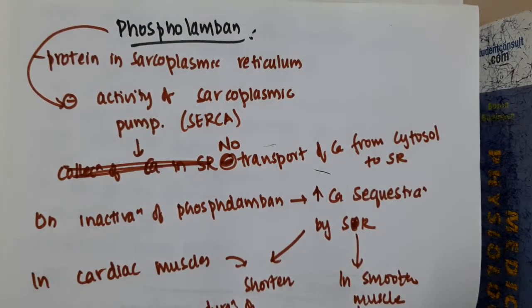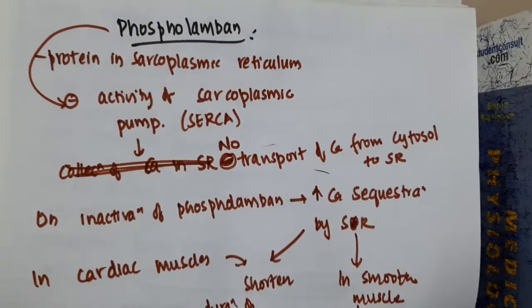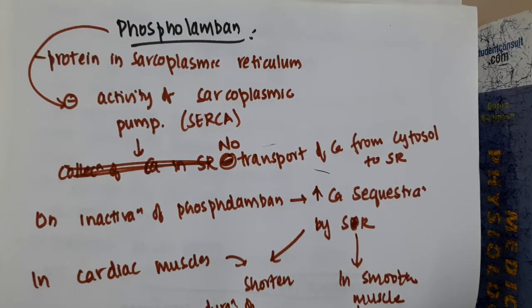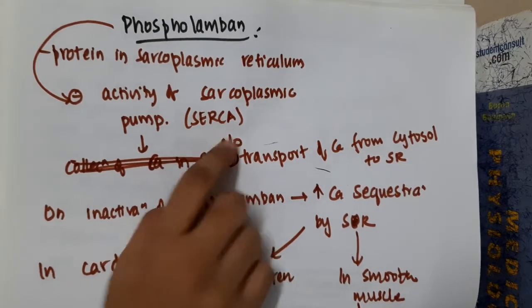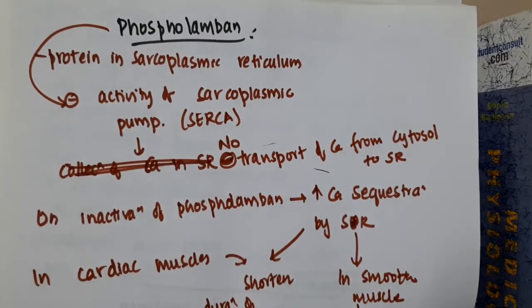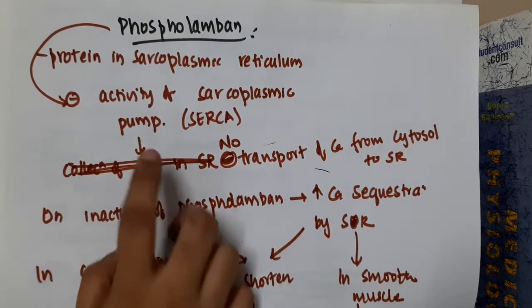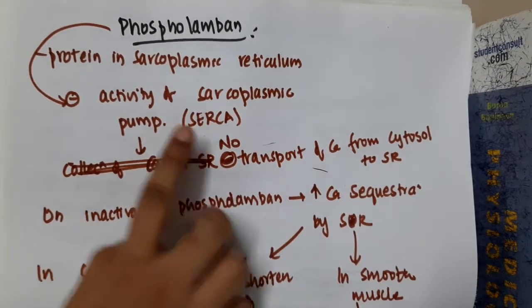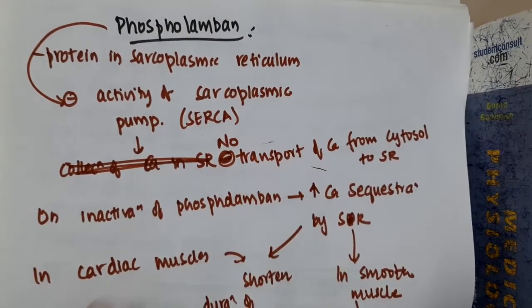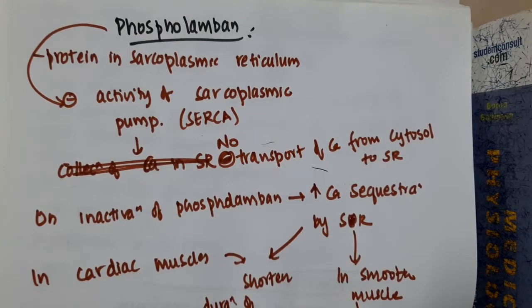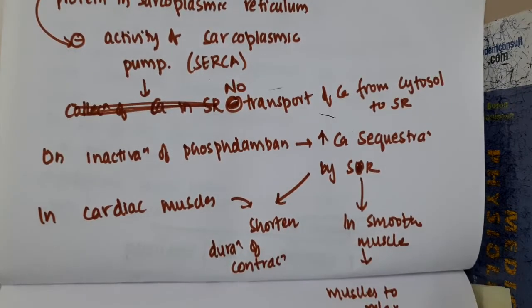Phospholamban is a protein which is present in the sarcoplasmic reticulum. It inhibits the activity of the sarcoplasmic endoplasmic reticular calcium pump. As a result, because this pump is inhibited, there will be no transport of calcium from the cytosol to the sarcoplasmic reticulum.